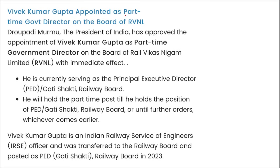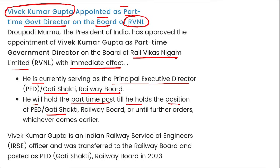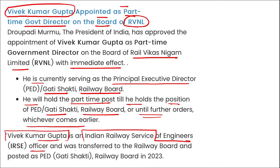किन को अभी part-time government director appoint किया गया on the board of RVNL — Rail Vikas Nigam Limited? वो है Vivek Kumar Gupta। इनको with immediate effect appoint किया गया है। यह currently serve कर रहे हैं as the Principal Executive Director of Gatishakti Railway Board, and यह hold करेंगे part-time post till he holds the position of Gatishakti Railway Board or until further orders, whichever comes earlier। Vivek Kumar Gupta एक Indian Railway Service of Engineer Officer हैं, transferred to railway board as PED at Gatishakti Railway Board in 2023।